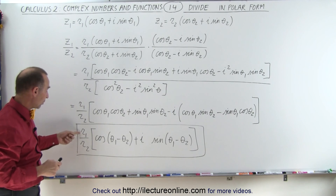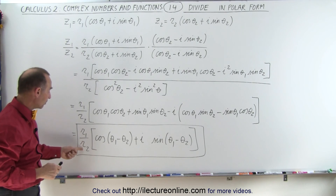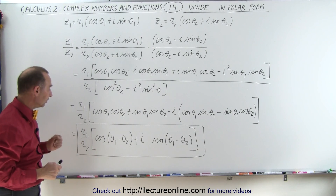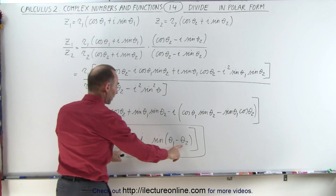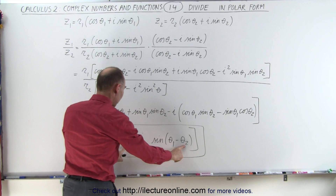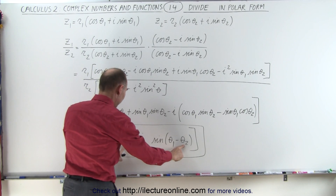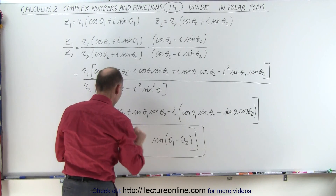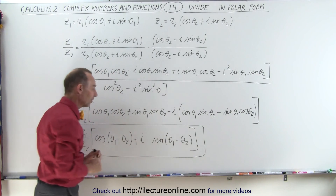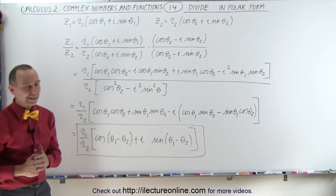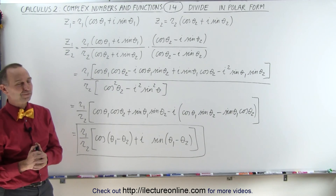We divide one modulus by the other, and notice that we subtract the argument of the second complex number from the first. And that's how it's done.